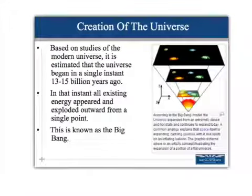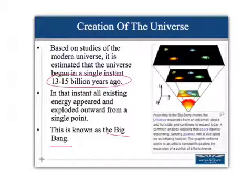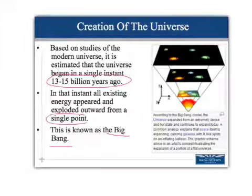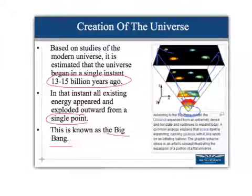Most of you have heard of the Big Bang Theory, which is the most widely accepted theory of the creation of the universe. This theory estimates that the universe is about 13 to 15 billion years old, and that all of the existing energy appeared and exploded outward from a single point. Those particles would coalesce and form stars, dust clouds, meteors, and then planets.